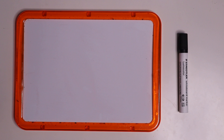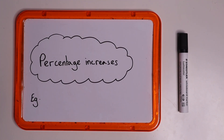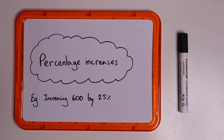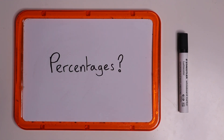In today's video we are going to talk about percentage increases, for example, increasing 600 by 25 percent. There are a number of ways to do this, but first of all we really have to understand what percentages are.